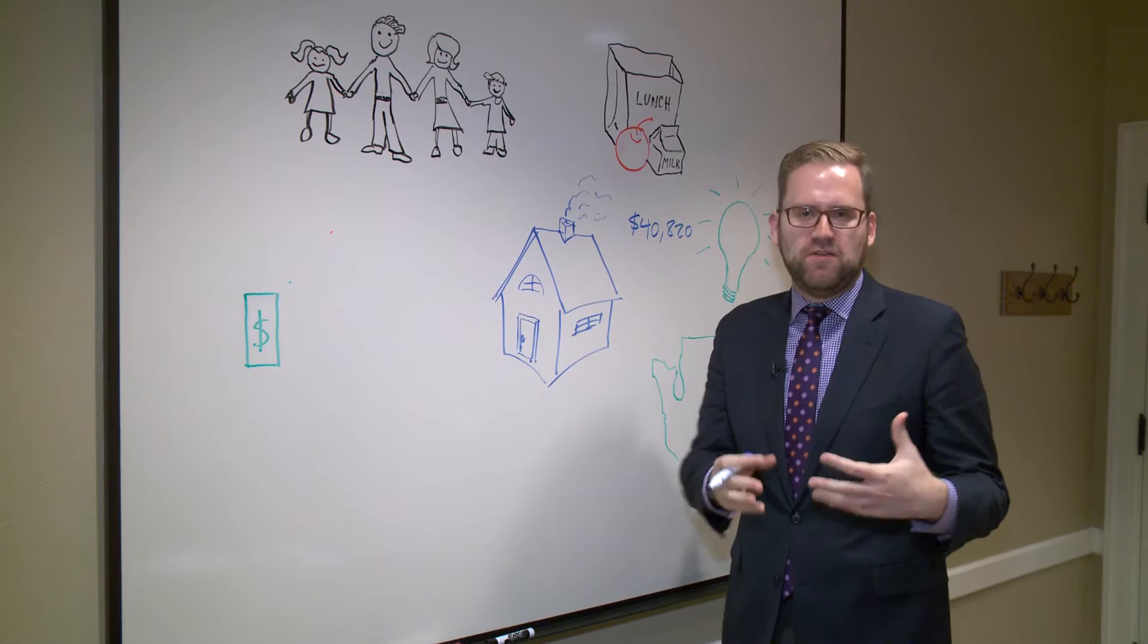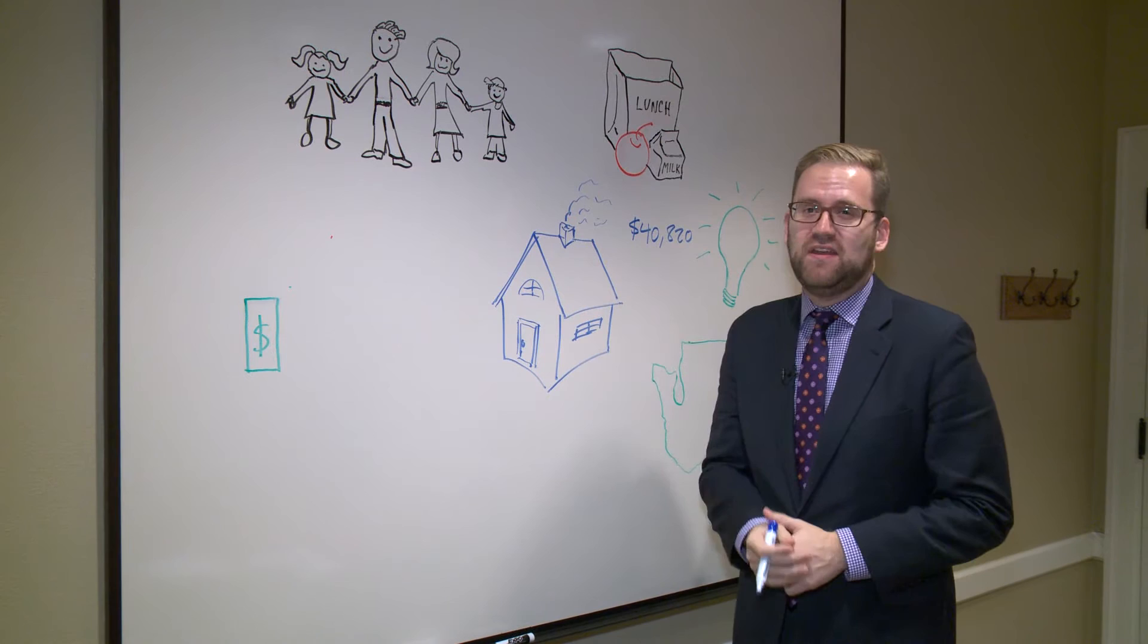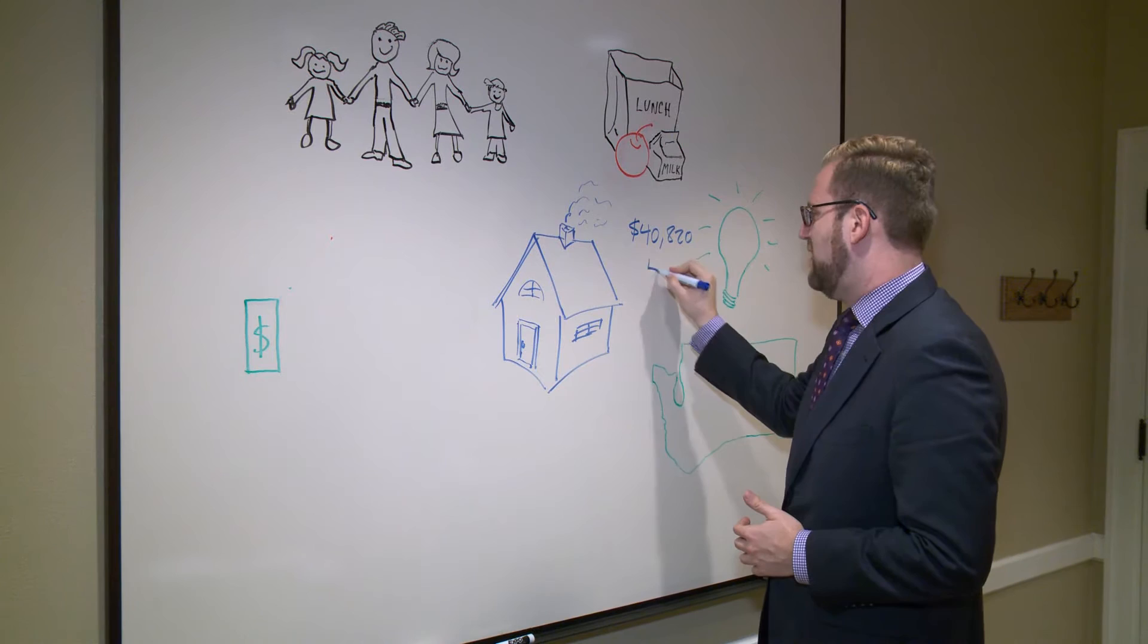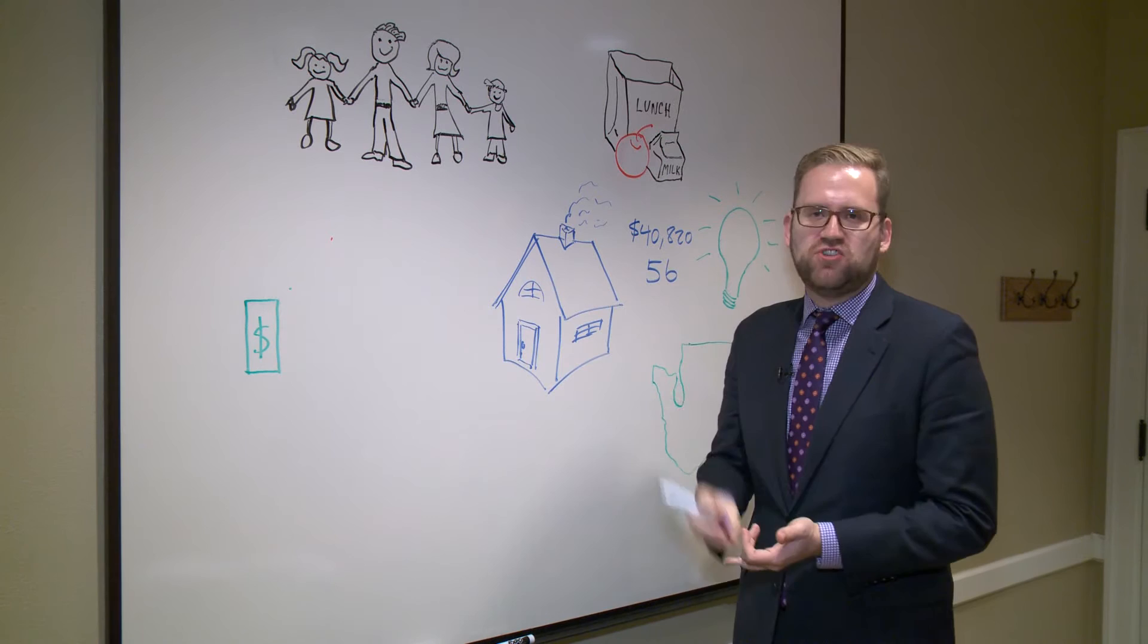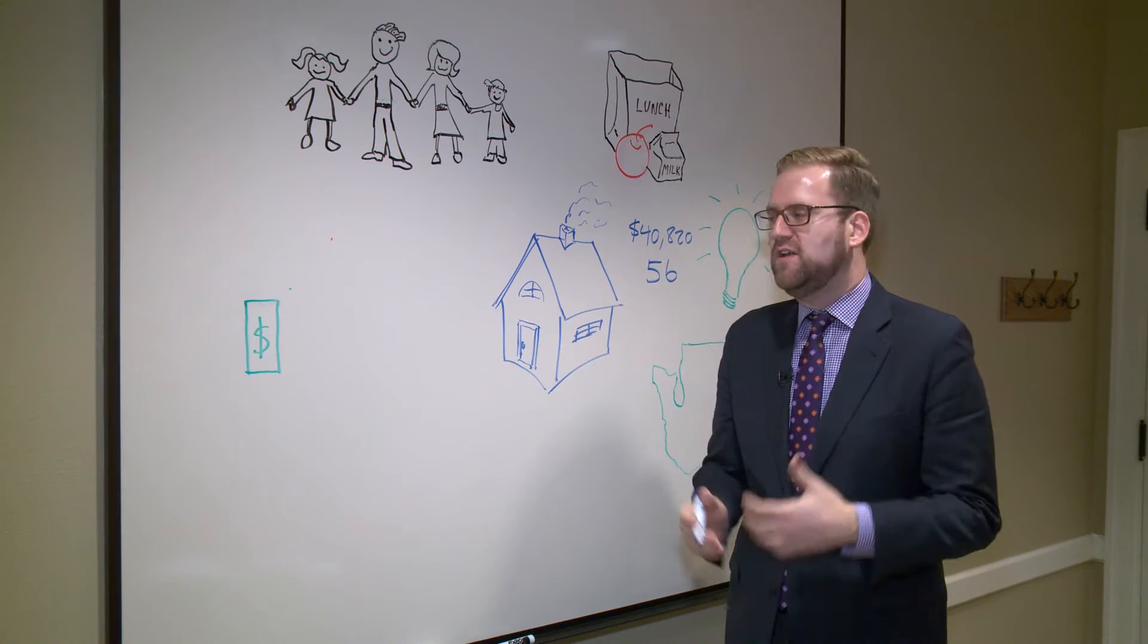When you think about what that means for a family of four, we actually took a look at some of the public assistance programs that a family of four earning just that beginning teacher salary would make and found out that a family of four making $41,000 qualifies for 56 different economic benefits and programs, whether that's child care or food programs, Women, Infants and Children that helps get some basic nutrition.